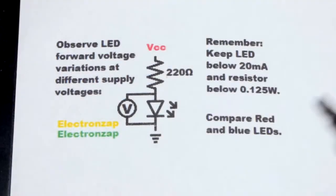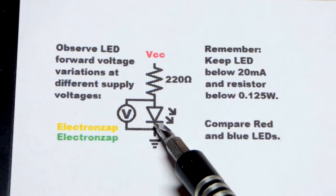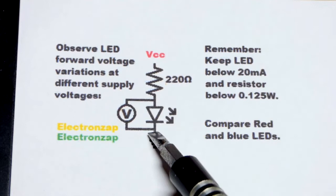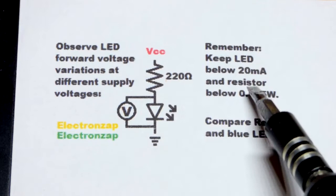So now in this video, we're going to keep an eye on the voltage across a forward bias LED while we are raising the supply voltage. That's why we have VCC, it's an undetermined supply voltage. A couple of things to keep in mind though: you need to keep the current through the LED to less than 20 milliamps of current, and you want to keep the wattage of the resistor below 0.125 watts.